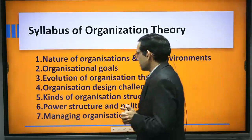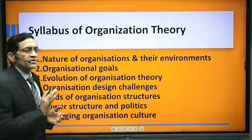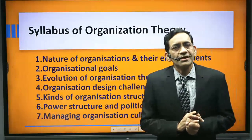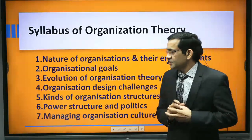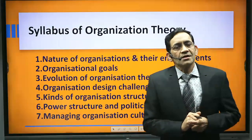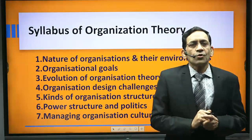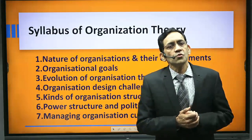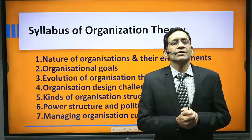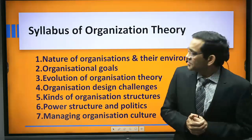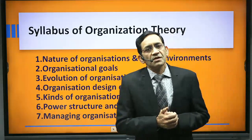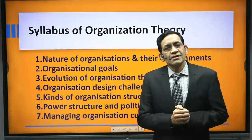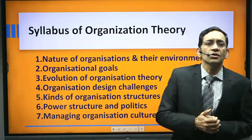The syllabus of Organization Theory consists of seven broad chapters. First is nature of organization and their environment — here you will come to know what an organization is. Second is organization goals — what are organization goals and why organizations exist. Third to seventh focus on how organizations work or how they can work in a better manner. Broadly, the chapters can be put into three parts: what is an organization, why organizations exist, and evolution of organization theory.